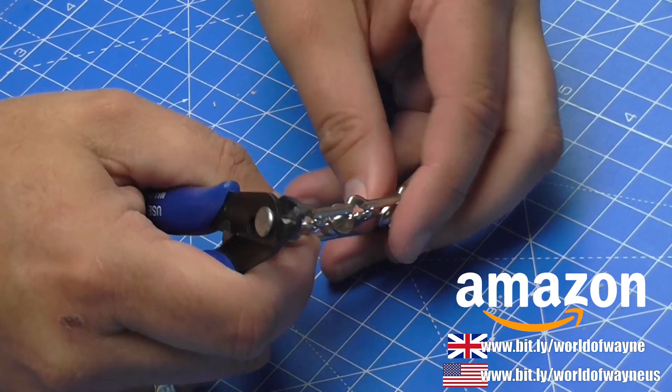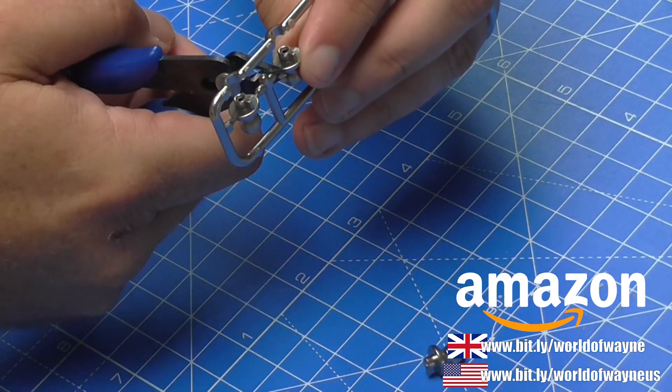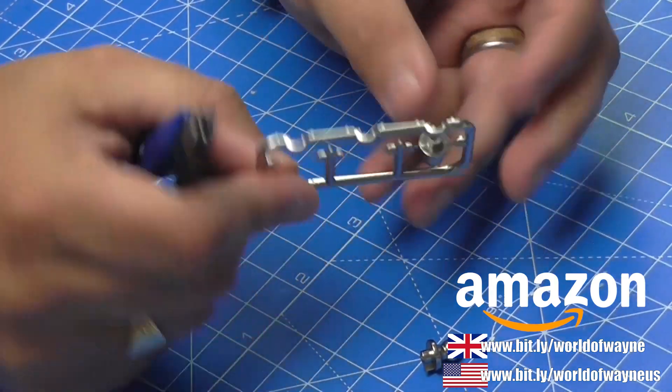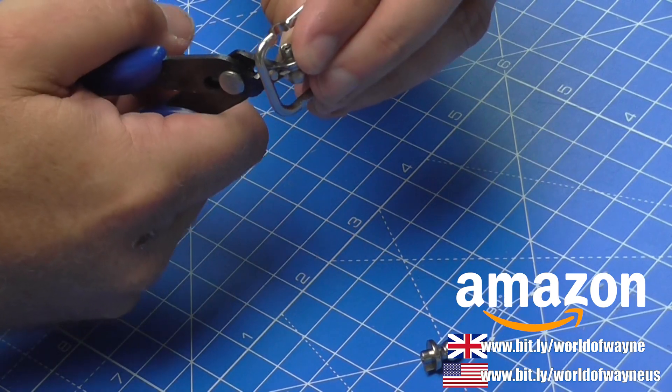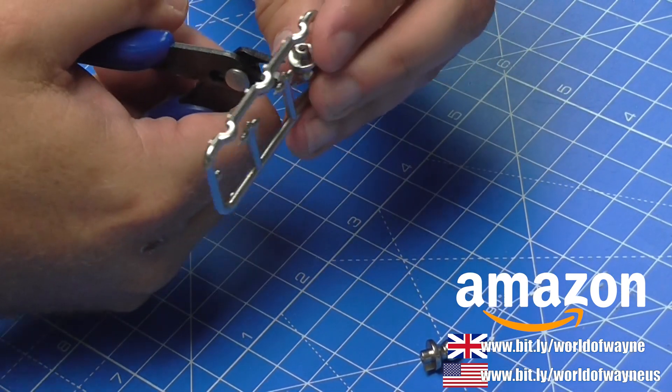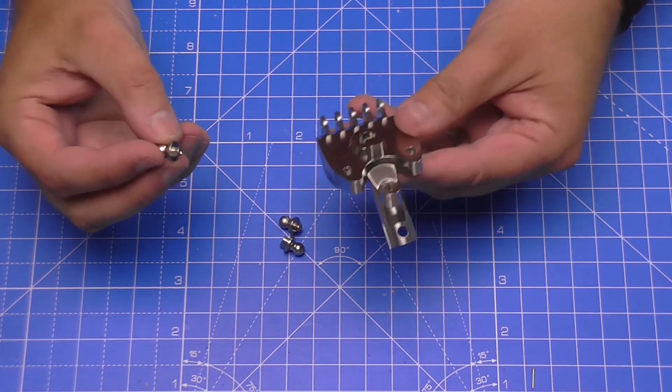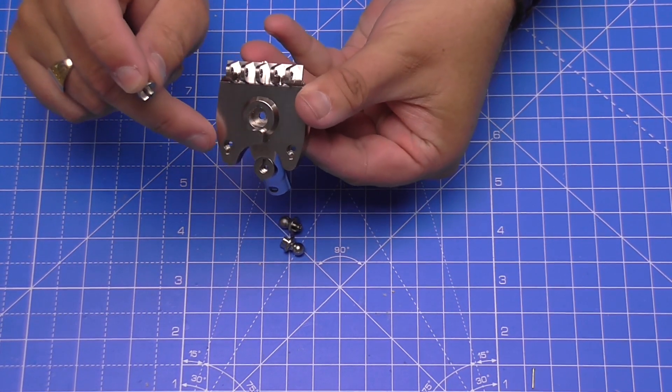These are available in my Amazon store and I've put a link down there so you can get these for yourself. If you're in the US go over to the US site, and if you're in the UK go over to the UK site. Unfortunately I haven't got stores in Australia and Canada yet. That's the three ball joints off now.